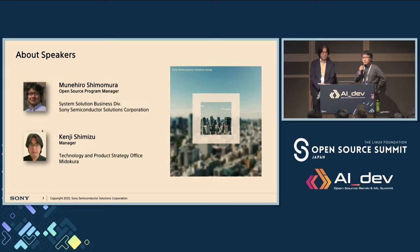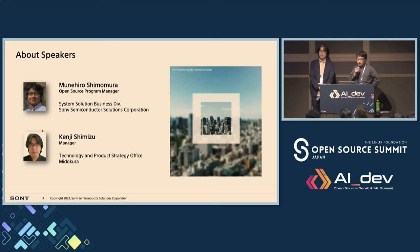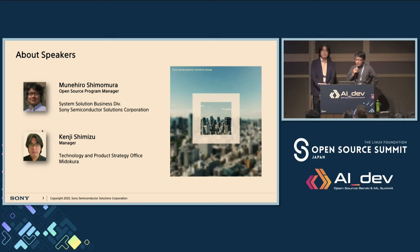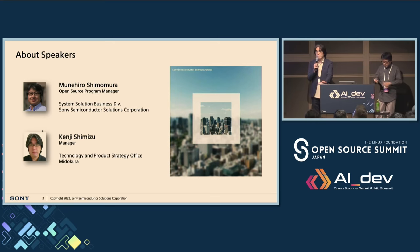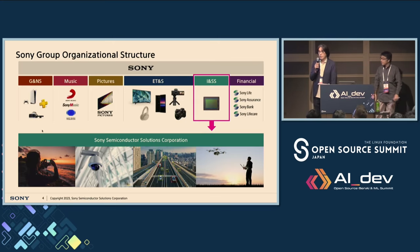I'm Shimomura, currently at Sony Semiconductor Solutions, where I'm working on development of edge AI devices and the platform for that. I'm also working on planning and expanding strategies related to open source. And hi, my name is Kenji Shimizu. I'm working at Midokura, one of the Sony Group companies, and I'm in charge of ecosystem expansion development.